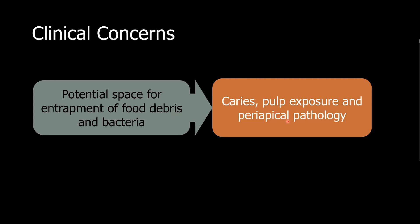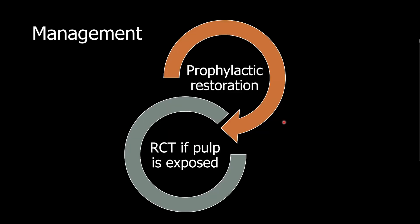In our radiograph, we saw a large cystic lesion around the apex of the lateral incisor. So how do we manage a tooth with a dens in dente or dens invaginatus? It's simple — we start with a prophylactic restoration, and that should be enough. If the tooth is exposed, then an endodontic procedure is needed.